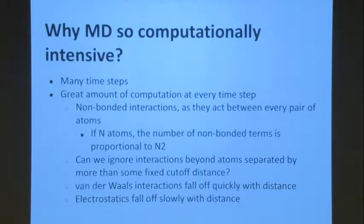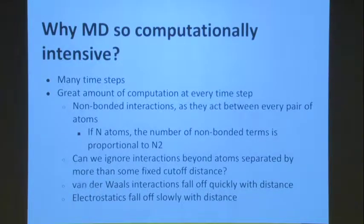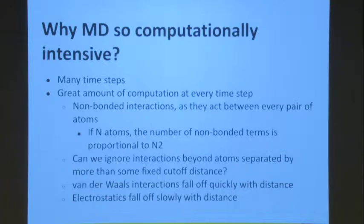Why is this so computationally intensive? You need to take many time steps — if your delta t is very small and you want to cover a reasonably long time scale, you have a lot of time steps to cover, and there is a lot of computation in each time step. One trick: can we ignore interactions beyond atoms separated by more than some fixed cutoff? That's something we usually use — you look only at interactions within a certain radius from your atom.